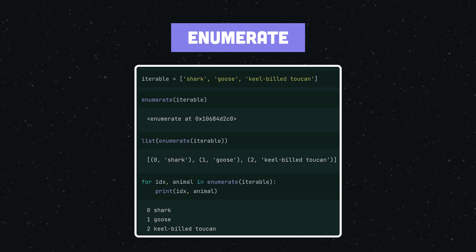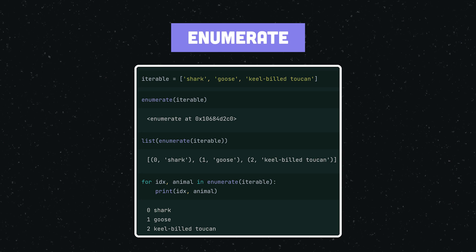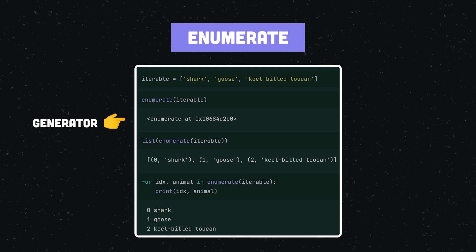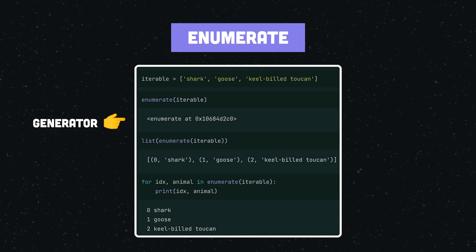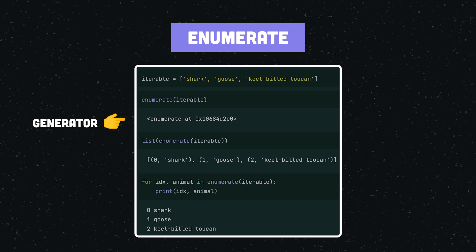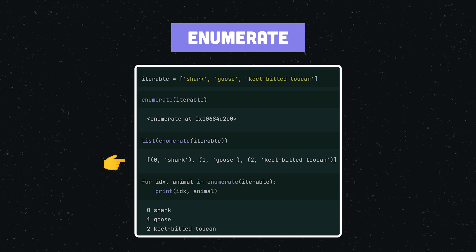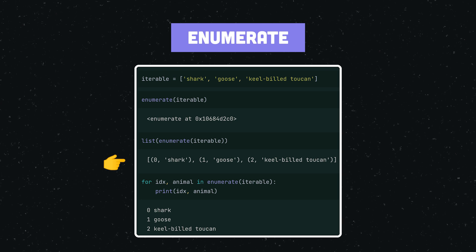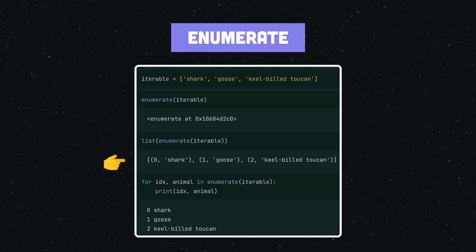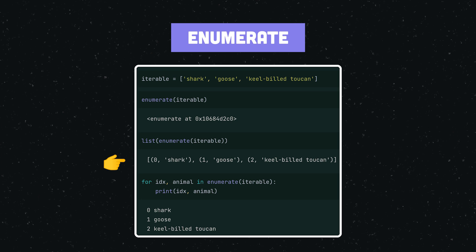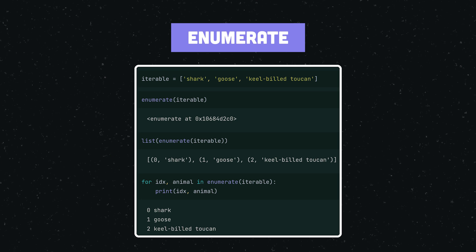`enumerate()` takes an iterable as argument and returns a generator that assigns an incrementing number to each sequential item in the iterable. Incrementing starts at zero by default, but a different start value can be provided by the optional start parameter.